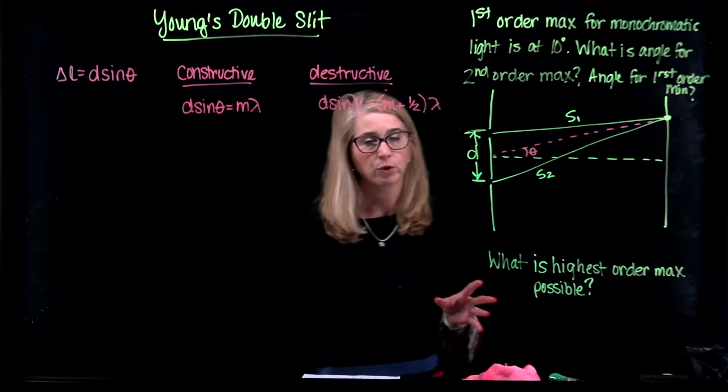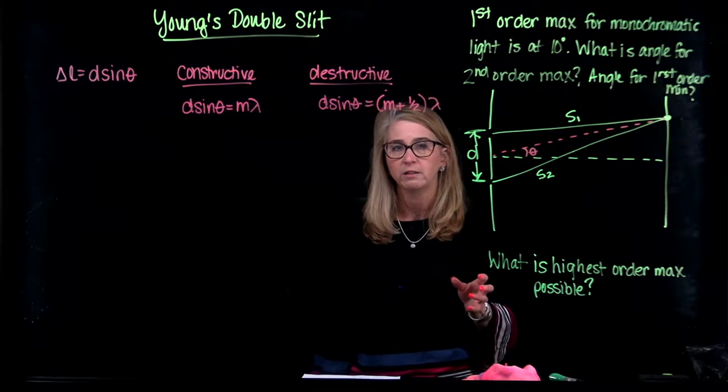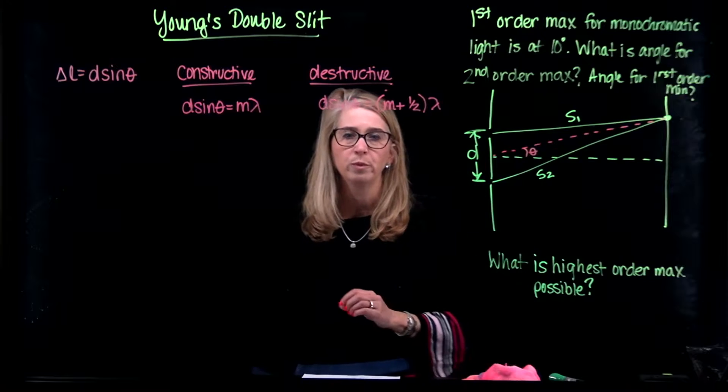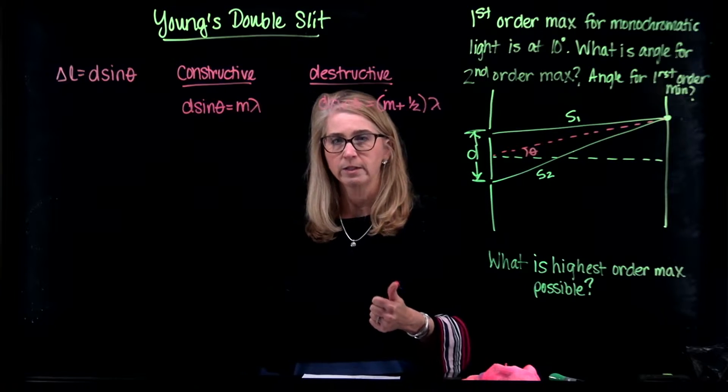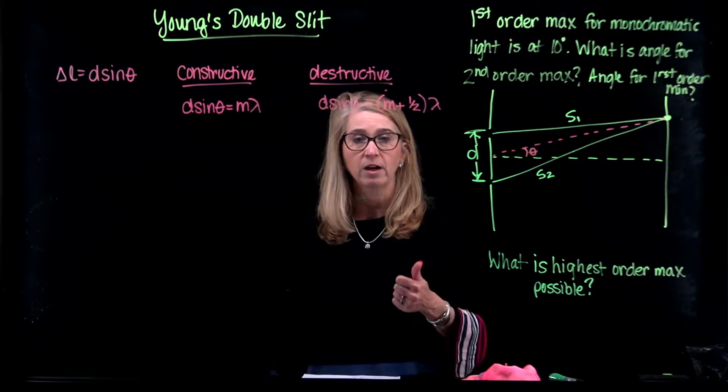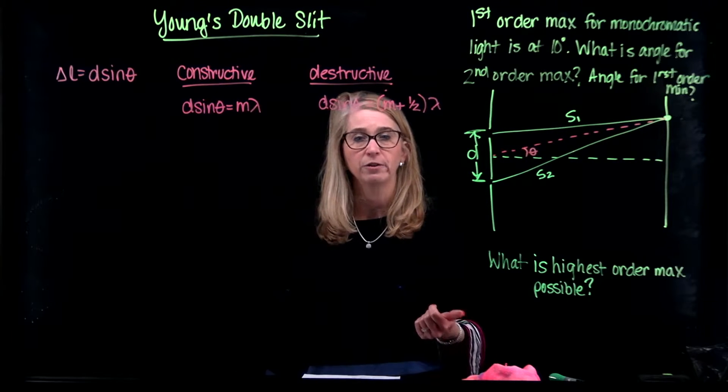So this is what we're told about our scenario. We have monochromatic light. Remember that it is important that the light that comes through the two openings is of a single wavelength and also in phase, it has a constant phase relationship, otherwise the interference pattern can't be stable.